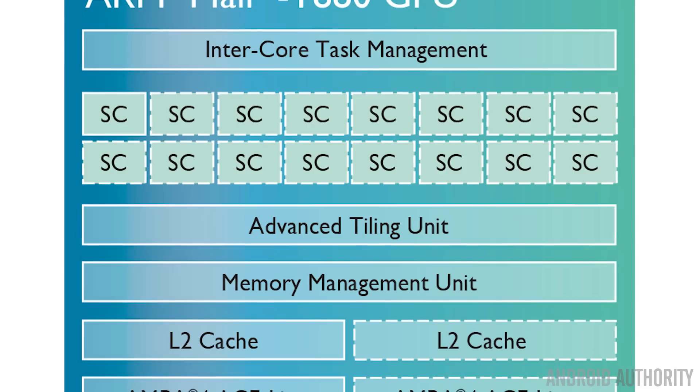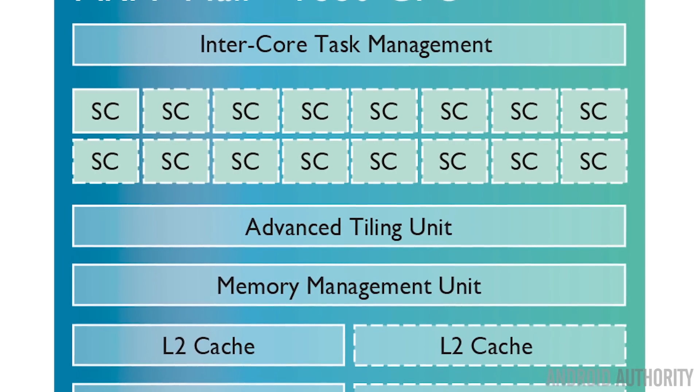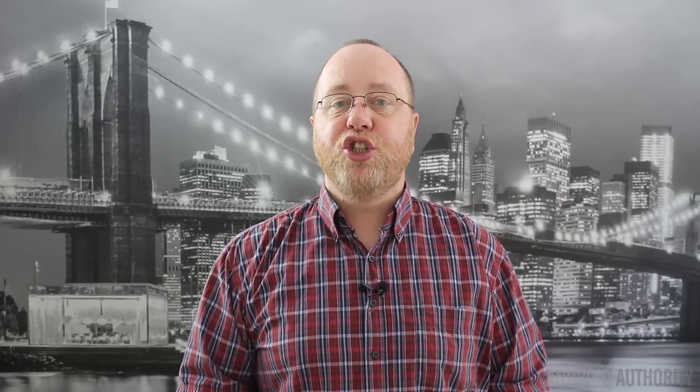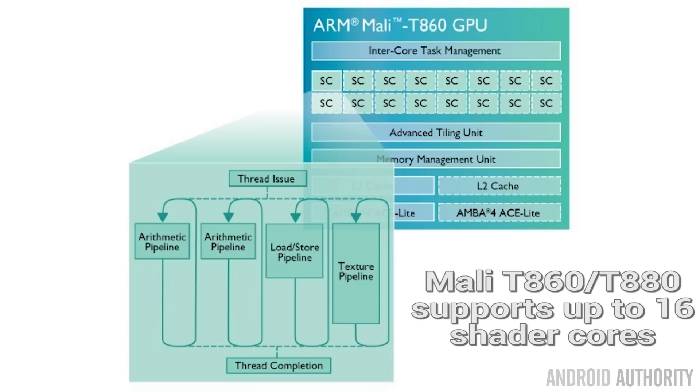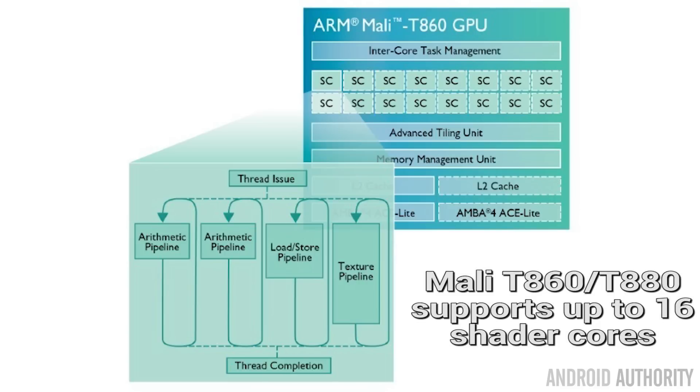If you look at an ARM Mali GPU, the end of the name — like the ARM Mali T880 — will have MP4 or MP12, and that number tells you how many shader cores it has. The more shader cores, the more work it can do in parallel.